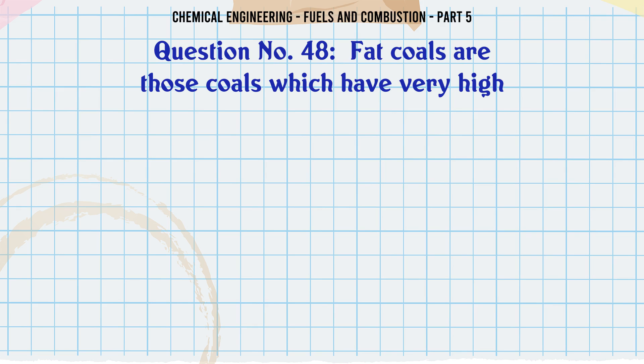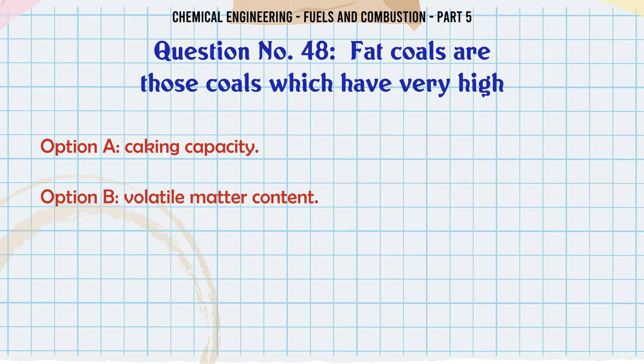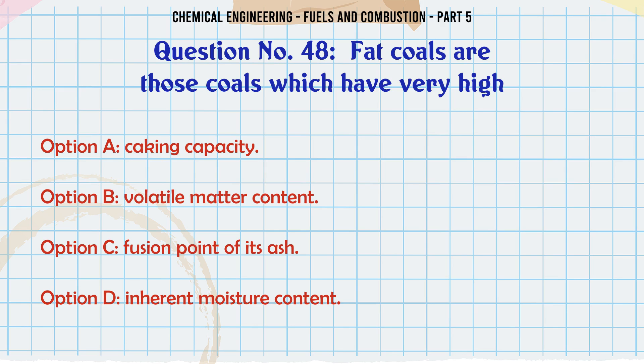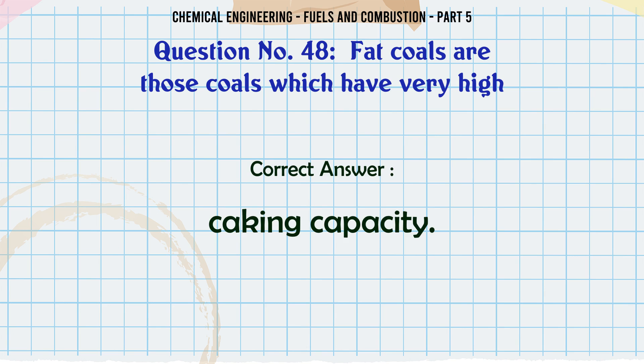Fat coals are those coals which have very high: A. Caking capacity. B. Volatile matter content. C. Fusion point of its ash. D. Inherent moisture content. The correct answer is caking capacity.